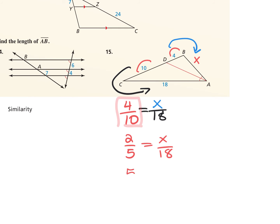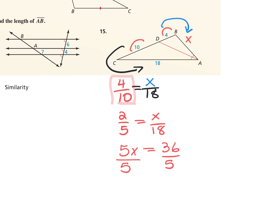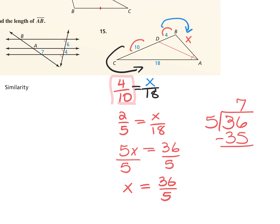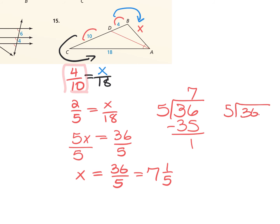Cross multiply: 5 times x, 2 times 18 is 36. Divide both sides by 5: x = 36 over 5. Simplify to a mixed number or decimal since it's a side of a triangle. 36 divided by 5: 5 goes in 7 times, remainder 1. As a mixed number it's 7 and 1-fifth. Adding a decimal point: 5 goes into 10 twice, so 1-fifth = 0.2. The length of AB is 7.2.